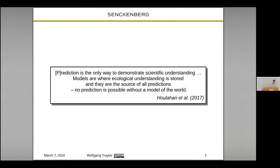I will start with a quote by Hulahan in 2017, who thought about prediction in ecology specifically. They say: prediction is the only way to demonstrate scientific understanding. Models are where ecological understanding is stored and they are the source of all predictions. No prediction is possible without a model of the world. And exactly there is where we want to go with mechanistic models.